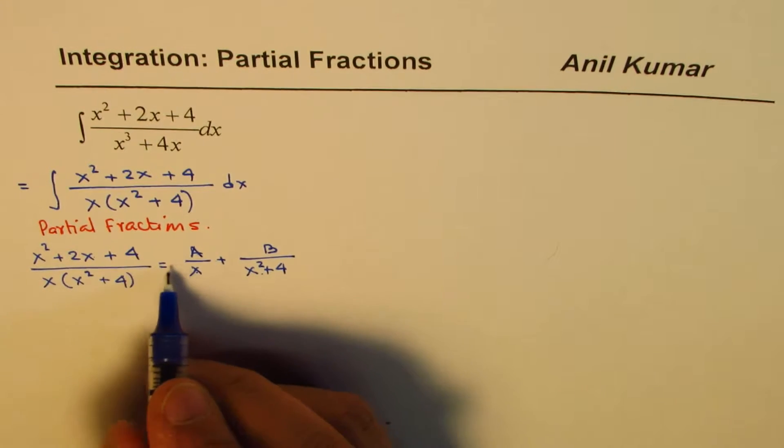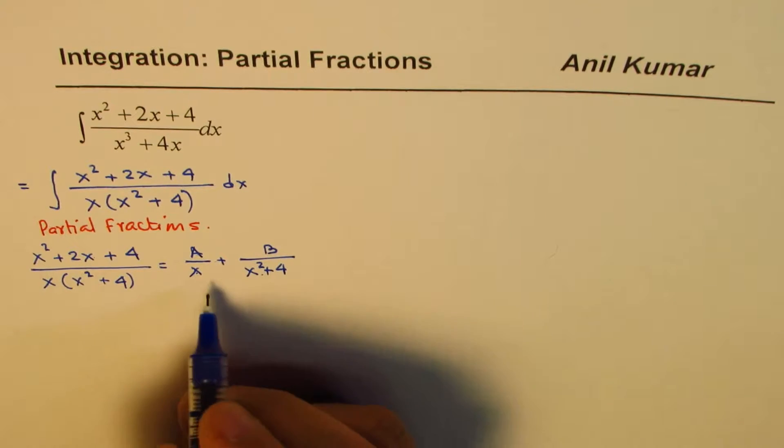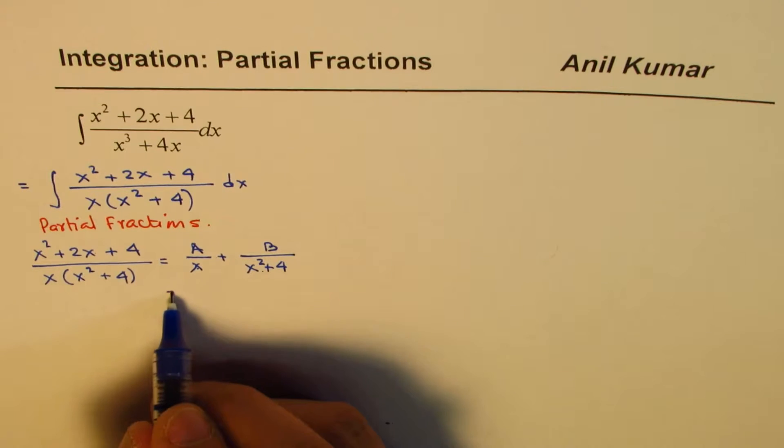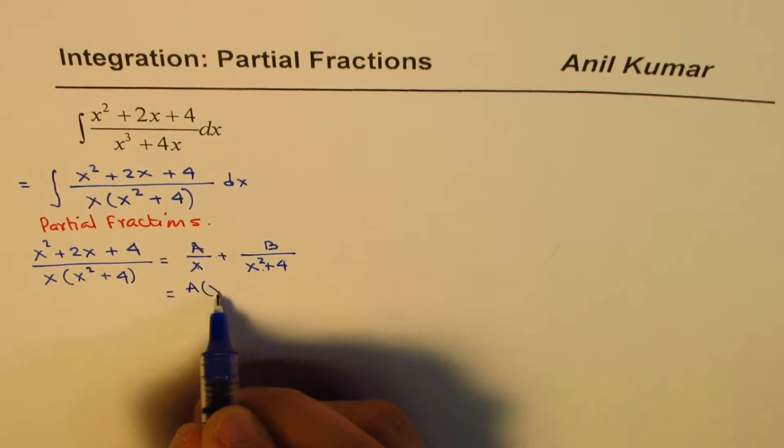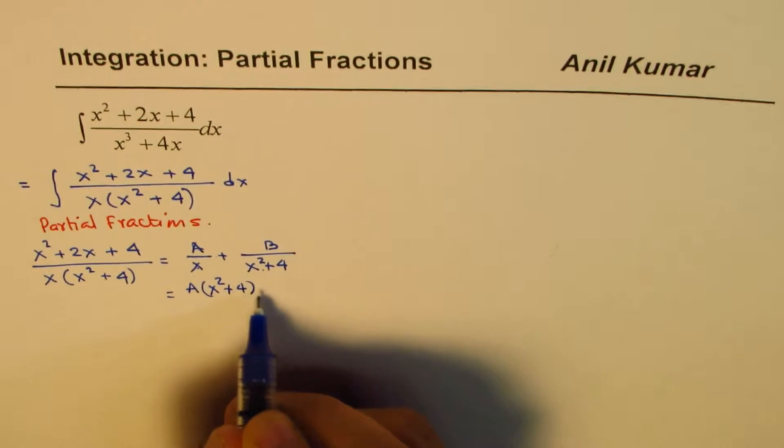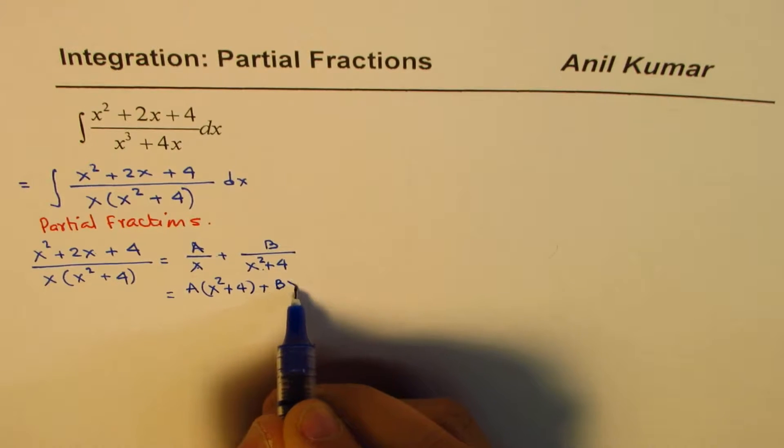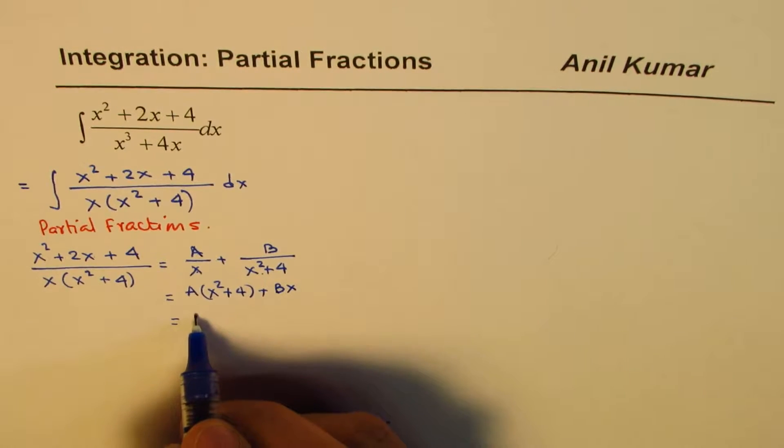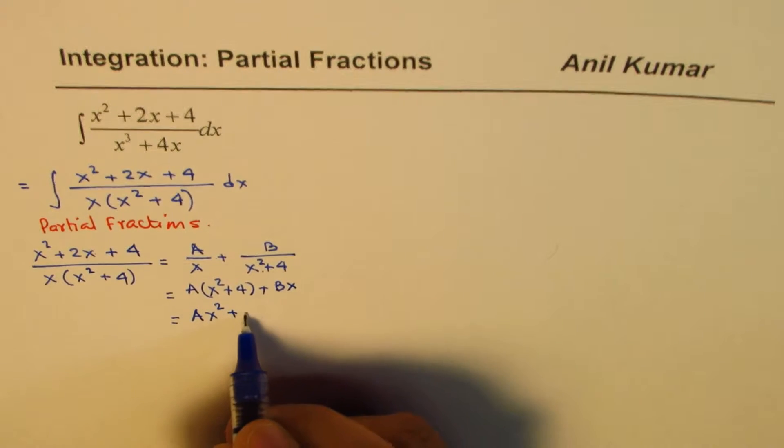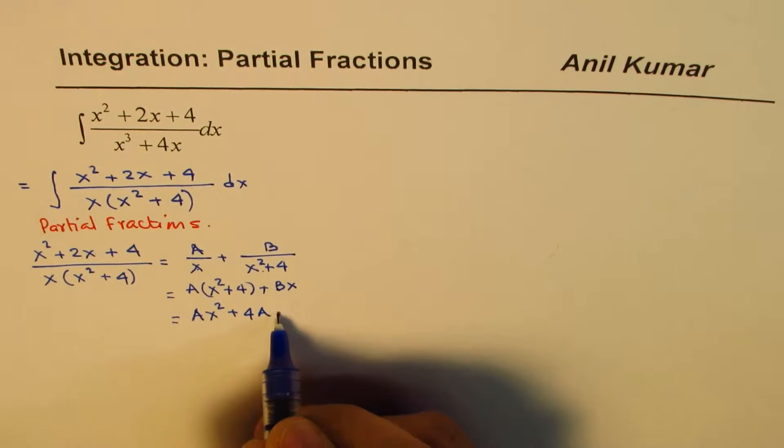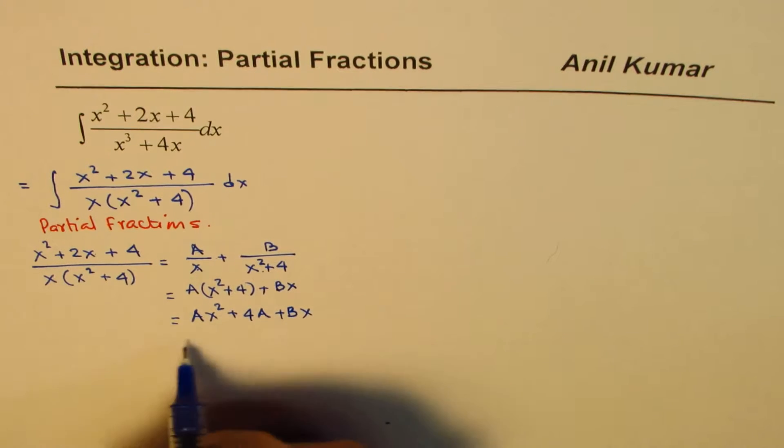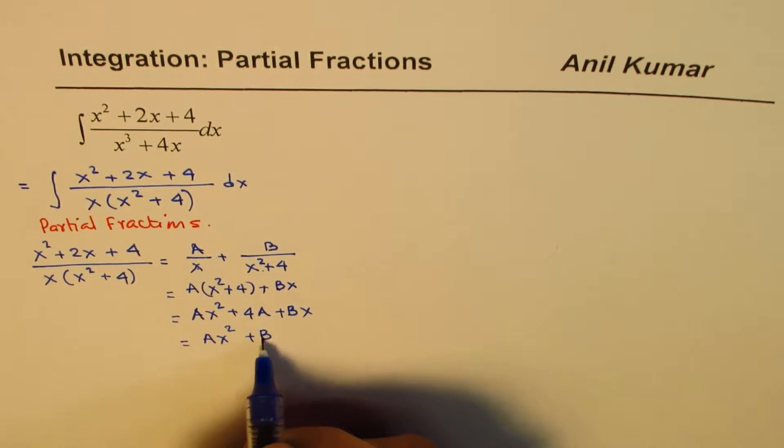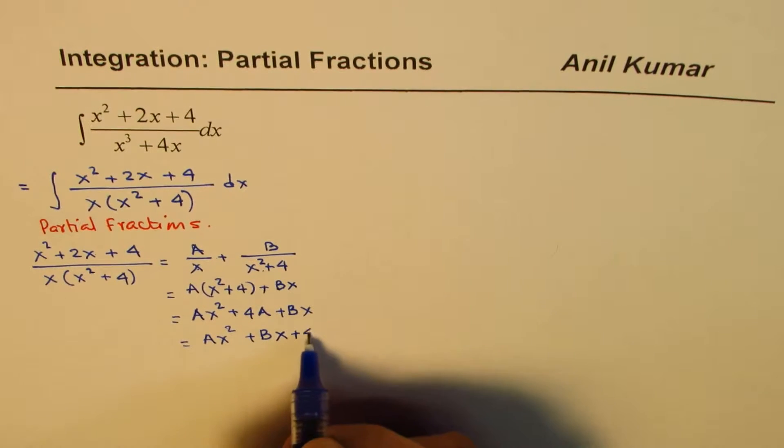Now if I take the common denominator, A gets multiplied by this, B gets multiplied by x, and that should be equal to this numerator. So we could write this as equal to A times x squared plus 4 plus Bx. Now when you open this up, you get ax squared plus 4a plus bx. Let me rearrange this.